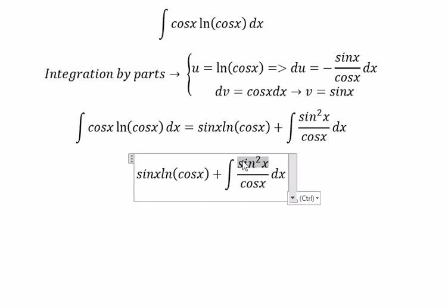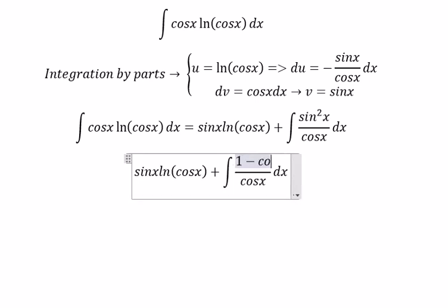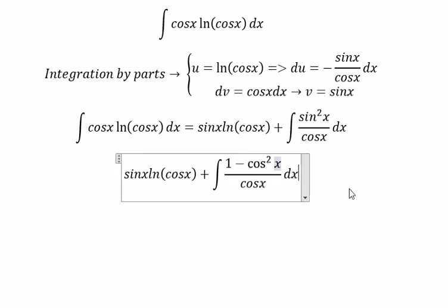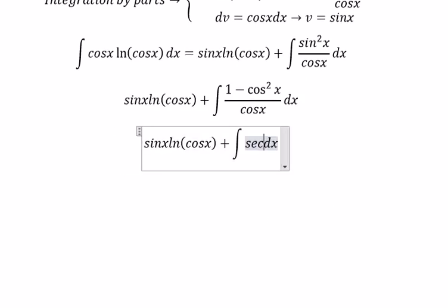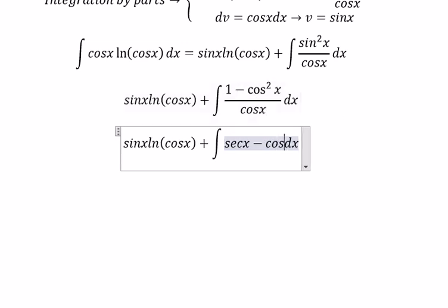This one we can put as 1 minus cos s square. 1 divided with cos s you got sec of s. Cos s square divided by cos s you got cos s.